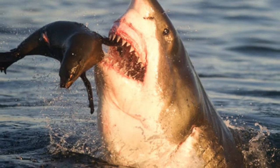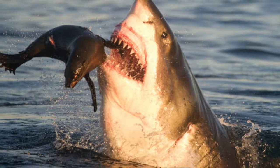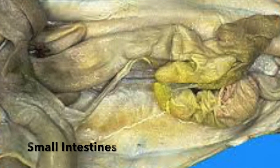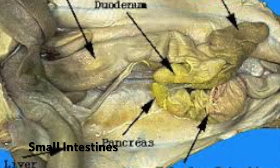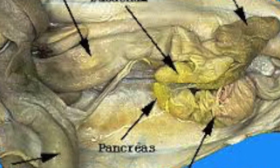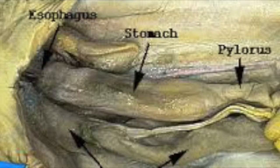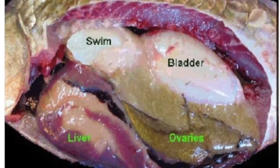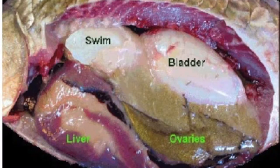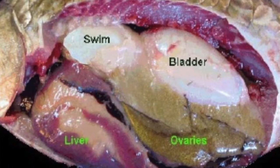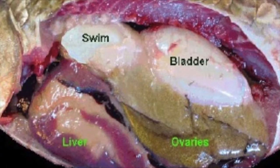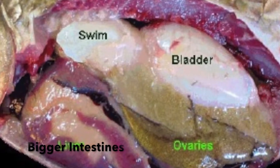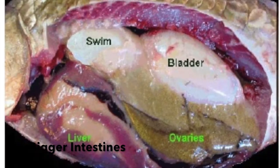When digesting substances, Chondrichthyes have a smaller size of intestine. On the other hand, Sarcopterygii have bigger intestines that are more useful in terms of digesting different substances.